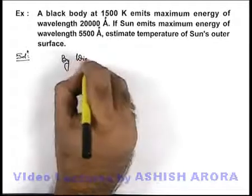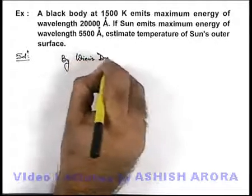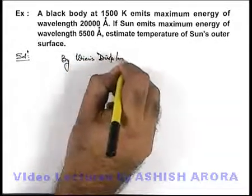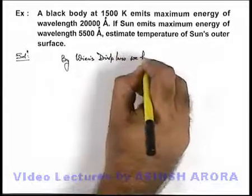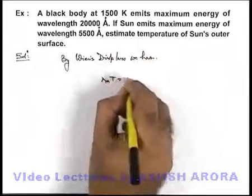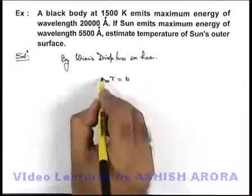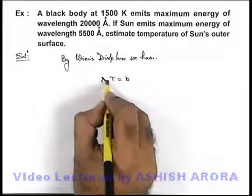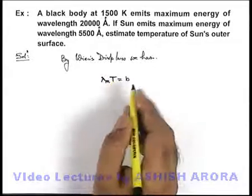By Wien's displacement law, we have lambda m into T is the Wien's constant. Lambda m is the wavelength corresponding to peak spectral intensity and T is its absolute temperature.